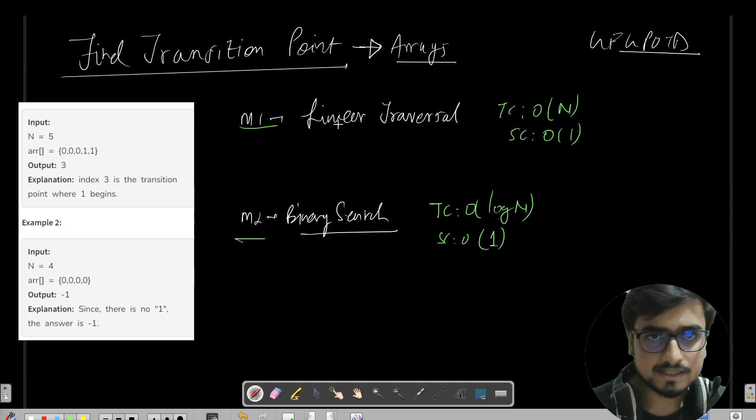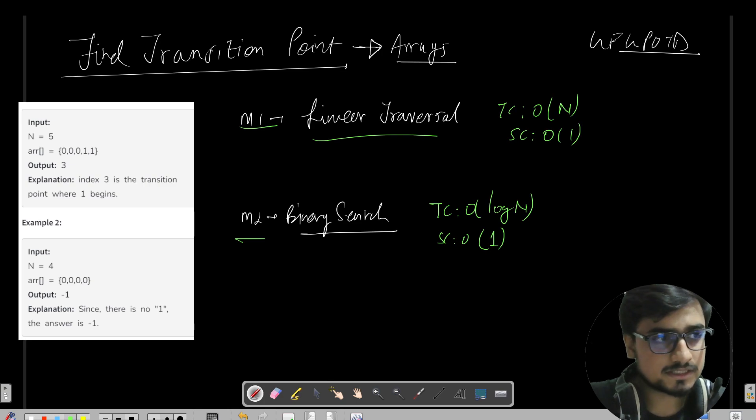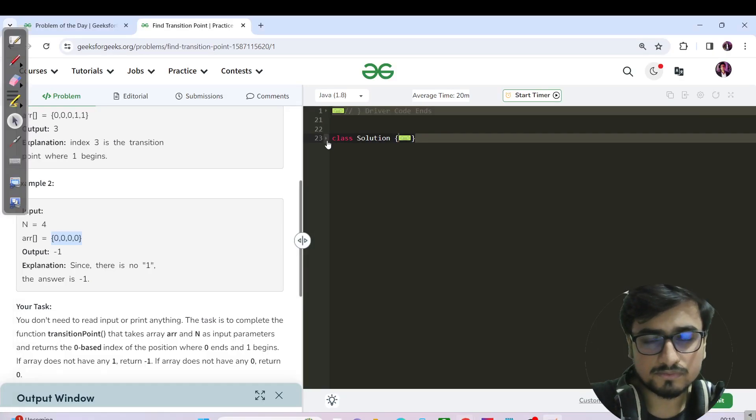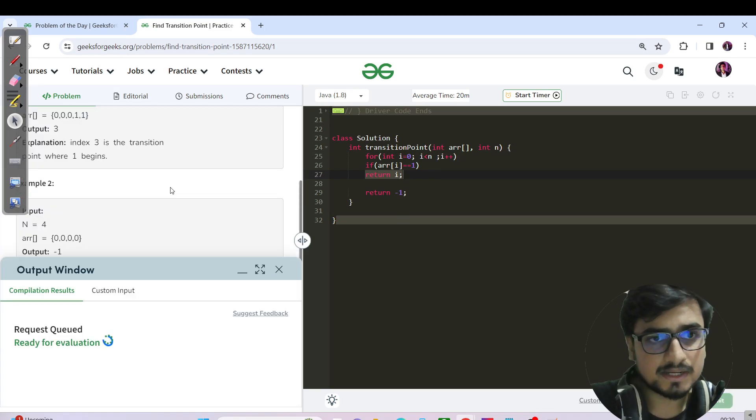Method one is very simple: linear traversal. You run a for loop, traverse until you find one, and once you have found your one you will just break from the for loop, return that index and that's it. You will get the answer.